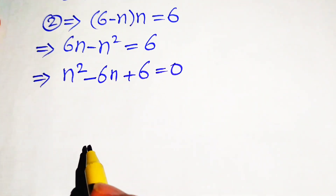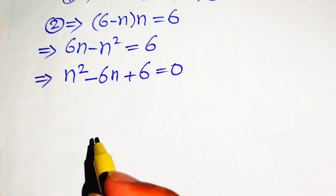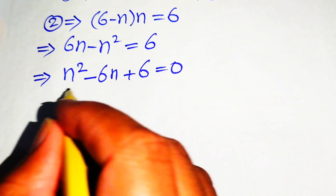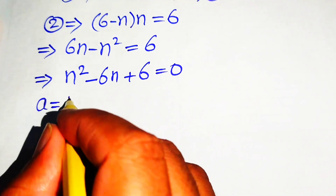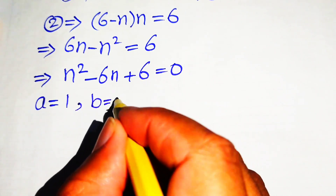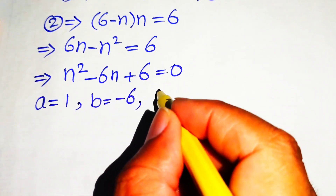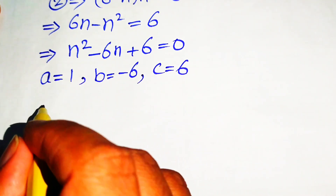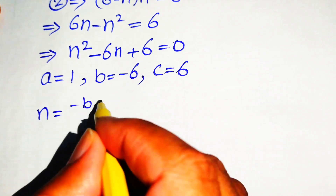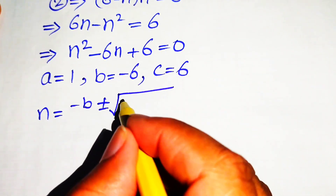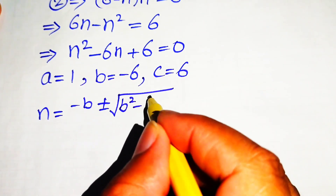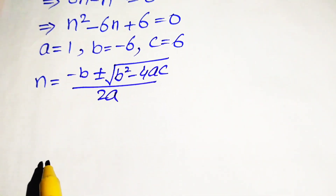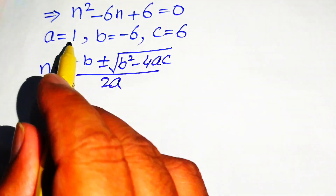This is a quadratic equation in standard form, so we apply the quadratic formula. The coefficients are a equals 1, b equals minus 6, and c equals positive 6. The quadratic formula is n equals minus b plus or minus the square root of b squared minus 4ac, all divided by 2a.